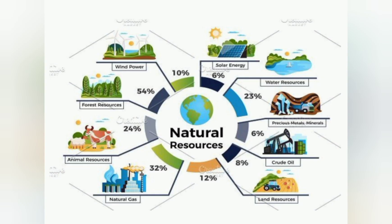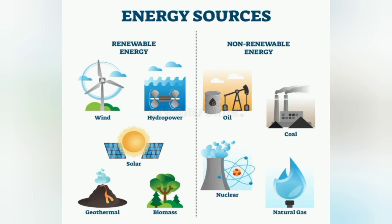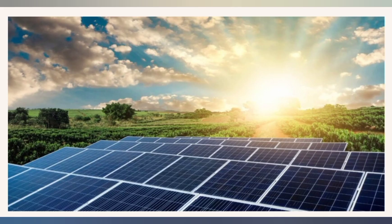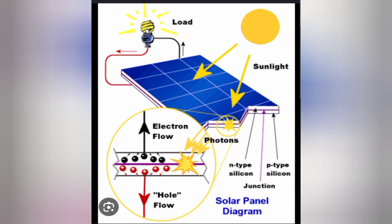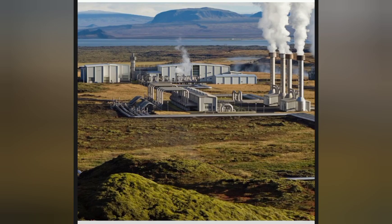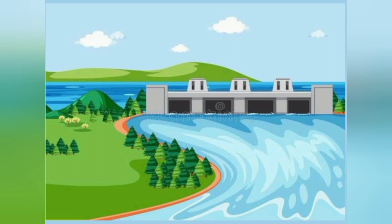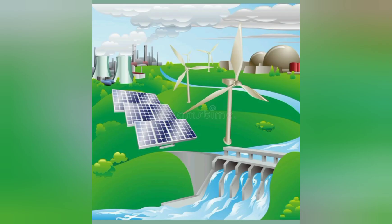Natural resources have two components: renewable energy and non-renewable energy. Renewable energy sources include solar energy — as shown in the solar panel diagram — as well as geothermal energy, hydro energy, and wind energy. Through these renewable sources, we can save our earth.